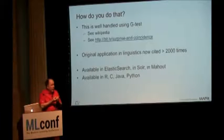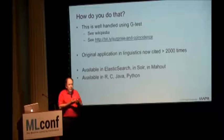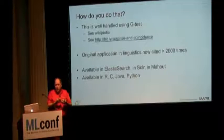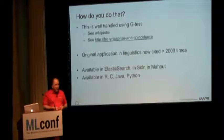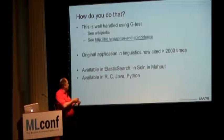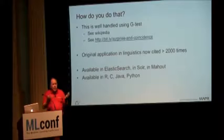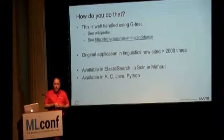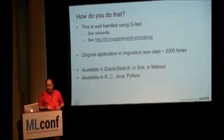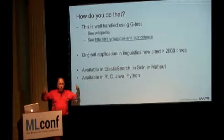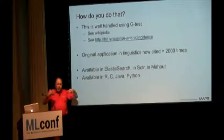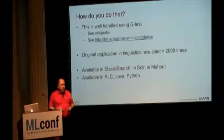This is very, very well handled by a test first derived in the 1950s by a Russian mathematician. It's called the G-test now. It's very closely related to mutual information. It's a very, very simple test to encode — it takes about four lines of R, a few more lines of Java. It's available in Elasticsearch, Solr, and Mahout. There's lots of software that embodies it already, and a lot of computational linguistics software that does it.